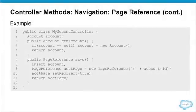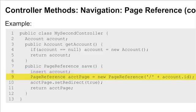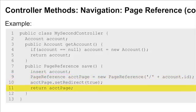Here we have a simplistic controller with an action method — I know it's an action method because it returns a page reference. What we do is instantiate a partial URL and redirect the user to the standard page layout for viewing an account record, which is salesforce.com slash and then the record ID. The key thing is that on line 11 we are returning that page reference.